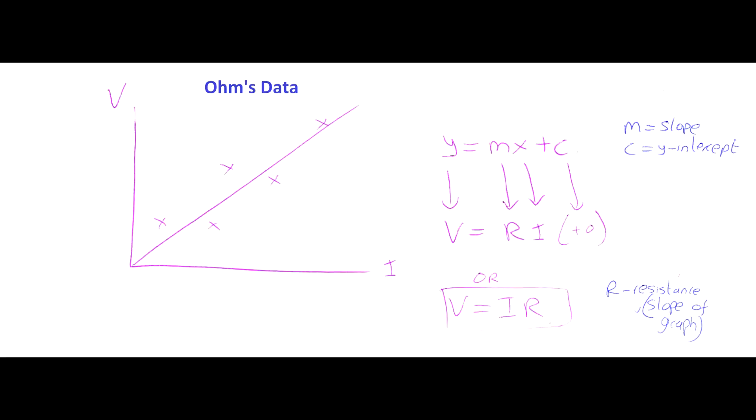There's no plus-c section to this graph because it goes through the origin — the y-intercept is zero. But he found that if you plot V against I, it has a gradient R, which is the resistance of the material. This equation is so important that basically every physics student has learned it for the last hundred years.